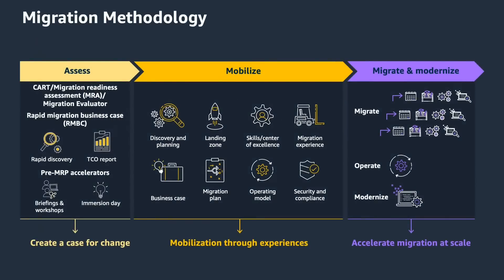Let's start with the AWS framework for migrations, because this is the fundamental approach for any kind of migration into the cloud — whether legacy or standard applications. This framework is based on previous customer experiences and is designed to be efficient and effective. It has three phases: the Assess phase, the Mobilize phase, and the Migrate and Modernize phase, each with specific activities that help accelerate migrations and reduce risk.